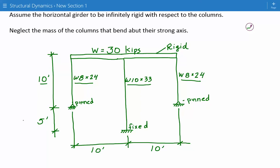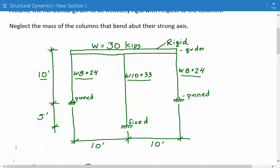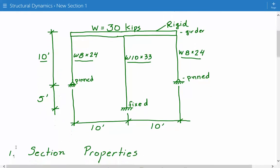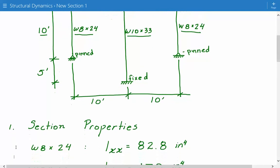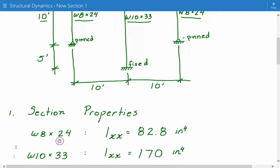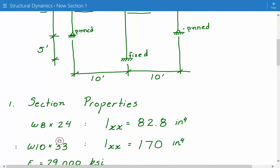And these three columns are supporting a horizontal girder, which has a distributed load along its length of 30 kips, and it's assumed to be rigid. So the first thing we'll do is get the section properties for each column type. We have two types of columns, W8 by 24 and W10 by 33. So we need to get the second moment of inertia, which will later be used in the stiffness calculations.